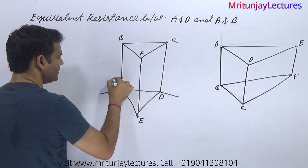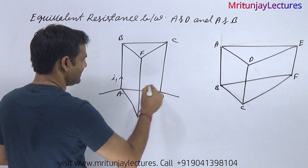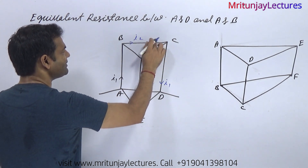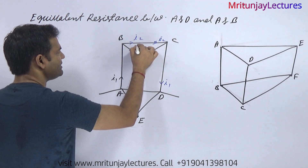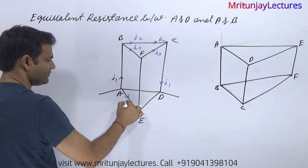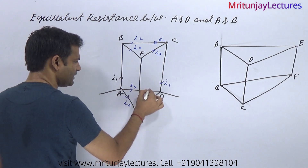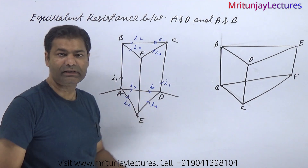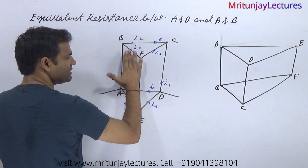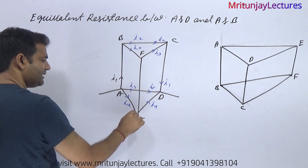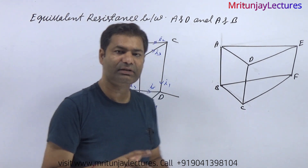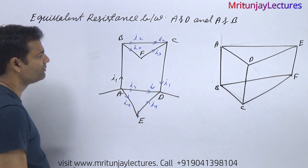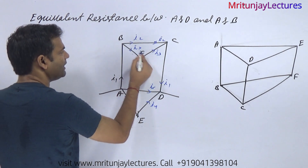Here i1, and here also i1; i2, i2; i3, i3; i4, i4; i5, i5. No current flows from E to F, or F to E, because of symmetry. Due to symmetry, the same current flows — it means that point and that point are physically touching but not electrically connected, so this branch is not involved in the equivalent resistance. You can remove it.